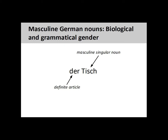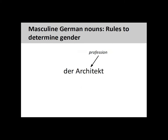Although the grammatical gender of German nouns is sometimes difficult to determine, there are some rules that can help you. Let's take a look at them now. As we have seen, nouns designating male beings are masculine.